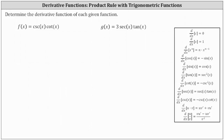Cosecant x is equal to one divided by sine x, and cotangent x is equal to cosine x divided by sine x. So we'll go ahead and leave it in this form. And because we have a product of two functions of x, we will have to apply the product rule of differentiation to find f prime of x.